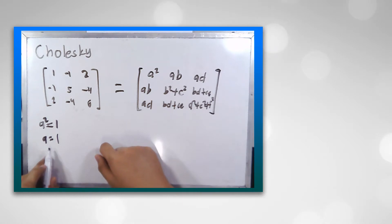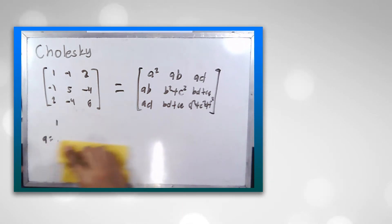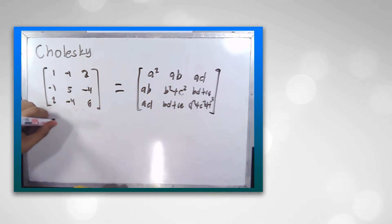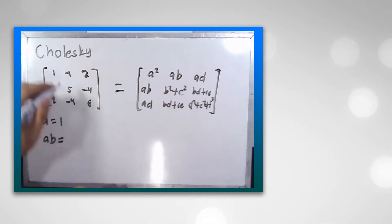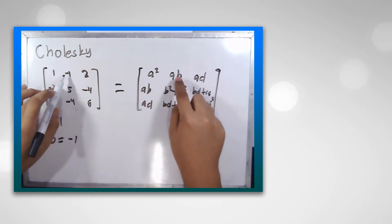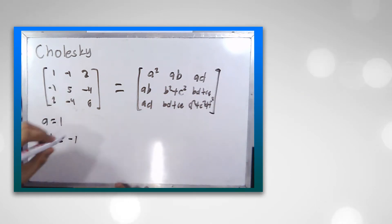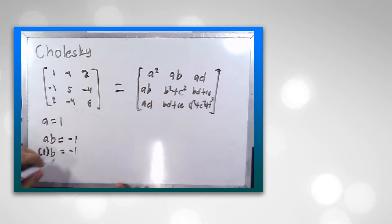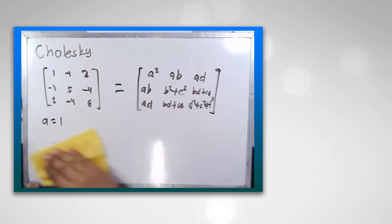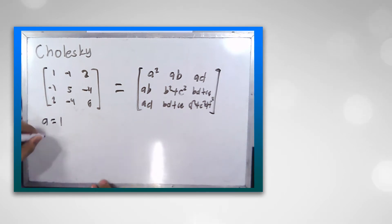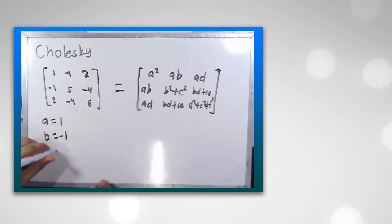Then we go for b. a*b is equal to negative 1. Since we know the value of a is 1, then b is equal to negative 1 over 1, therefore b is equal to negative 1.